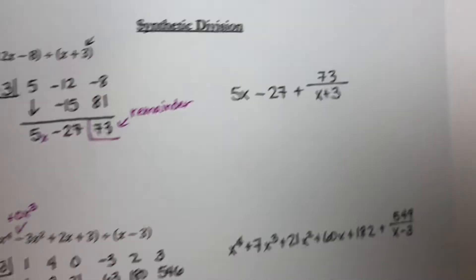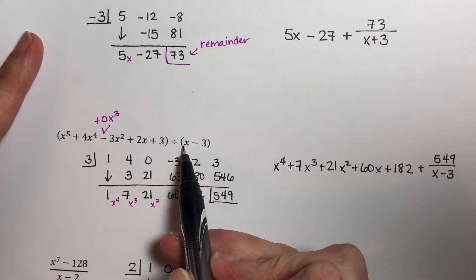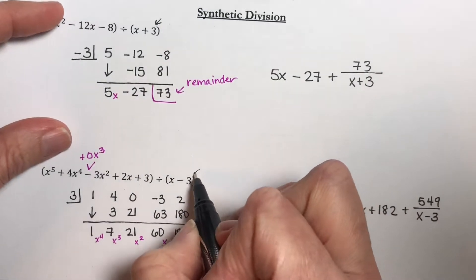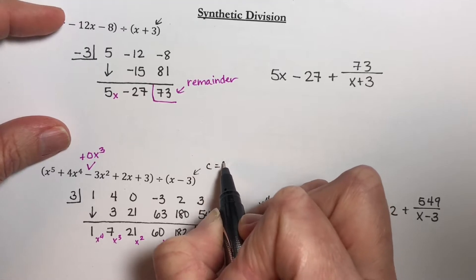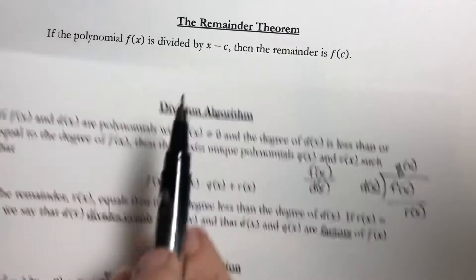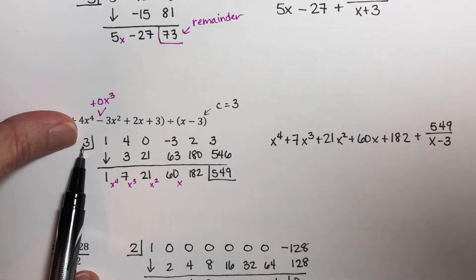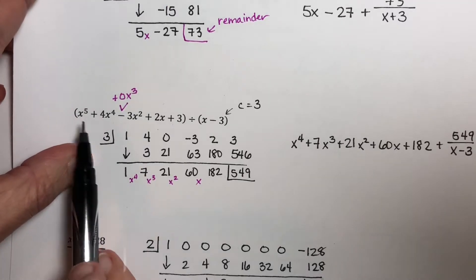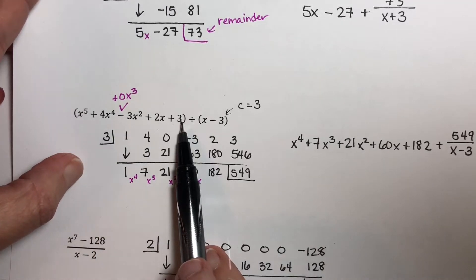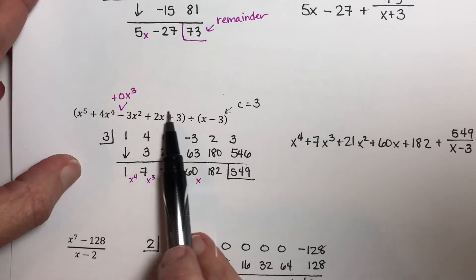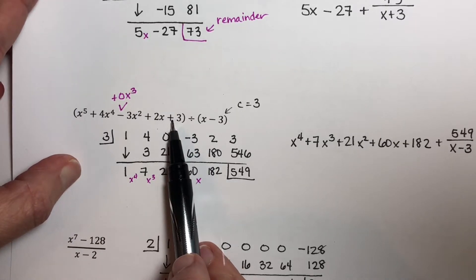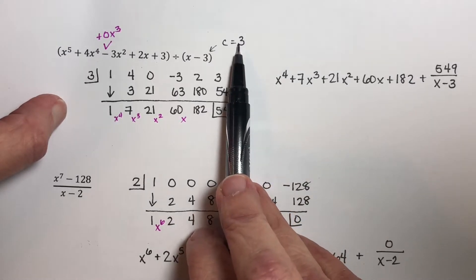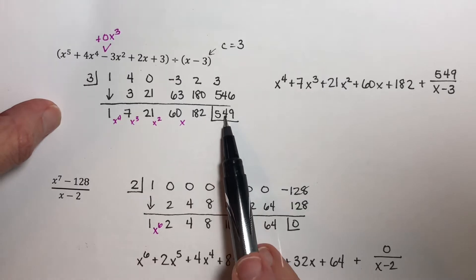Now look back at the problems we were just doing. So if this is x minus 3, this is x minus c. In this case, our c would be equal to 3. It's always the opposite sign of what we have here. So this value is what we had right here. What this theorem is saying is that if I took a 3 and plugged it into this and did all of the arithmetic following order of operations, the answer I would get is 549. So if I plugged in a 3 into this, this would be the answer I get.